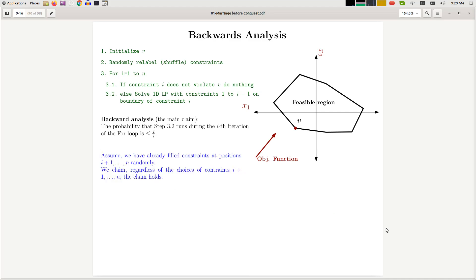So let's see how does that help. So assume that the constraints i+1 up to n have already been filled by random constraints. So in other words, if I look at the position of the constraint, I have already made some random choices for i+1 up to n.